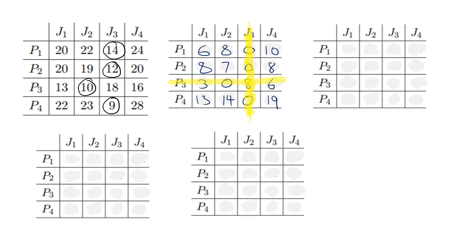So we need to go to the next step: perform a column reduction. In that table, identify the smallest value in each column and subtract every other value in that column by it — the same as row reduction but now done on columns rather than rows. If a column already has one or more zeros, it won't change, because subtracting zero leaves values unchanged. So the middle two columns J2 and J3 both have zeros, so they stay the same: J2 stays as 8, 7, 0, 14, and J3 stays as 0, 0, 8, 0.